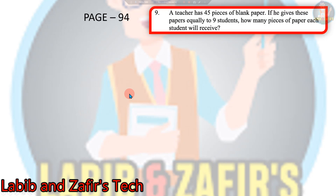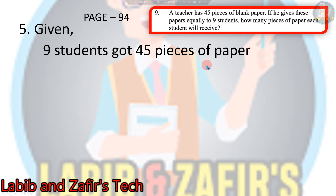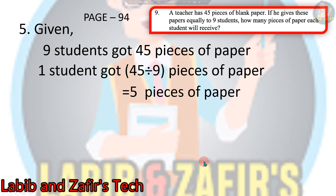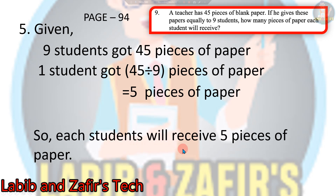Now let's go to our next word problem. Number 5: A teacher has 45 pieces of black paper. If she gives these papers equally to 9 students, how many pieces of paper will each student receive? Given: 9 students got 45 pieces of paper. One student gets 45 divided by 9, which is equal to 5 pieces of paper. So each student will receive 5 pieces of paper.